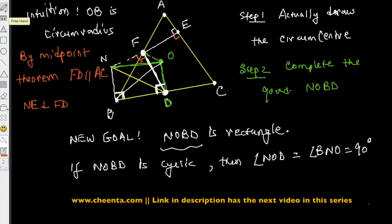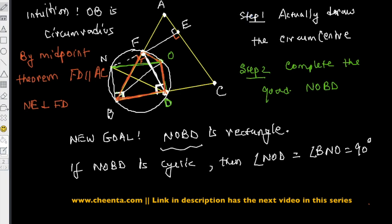We will now show that quadrilateral BFOD is also cyclic. In hindsight, you can see that we will have a beautiful circle circumscribing this pentagon. If we can show BFOD is cyclic, and we have already shown BNFD is cyclic, then by combining them, BNOD will be cyclic and we will be done.